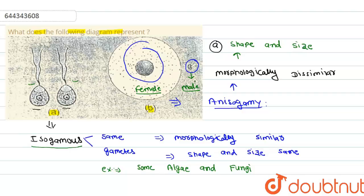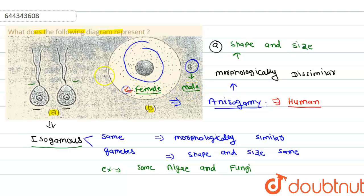So we can differentiate between the male and female gametes in anisogamy. The example of anisogamy is humans. In the human case, the female gamete is large — called the ovum — and the male gamete is small — called the sperm. So in anisogamy we can easily differentiate between the two gametes.